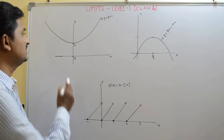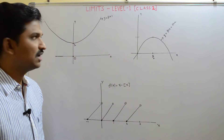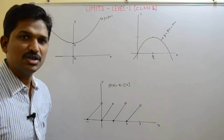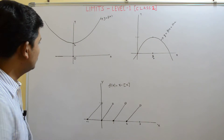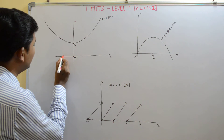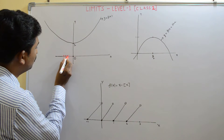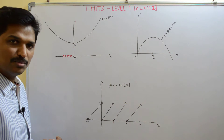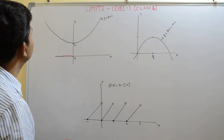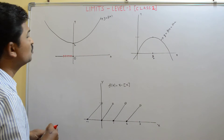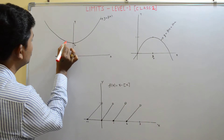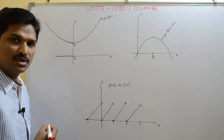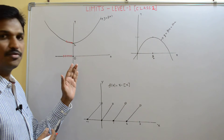Here you can see the graph — it is named as y equals f of x. You observe in this graph: as x approaches to 0 from the left, what are its functional values approaching? Its functional values are approaching to 1.